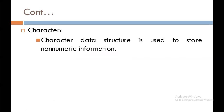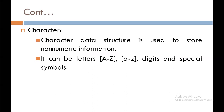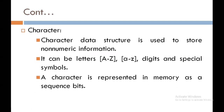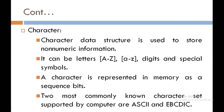The next data structure is character. It is used to store non-numeric information. It can be letters — capital A to capital Z, small a to small z — digits, and special symbols. A character is represented in memory as a sequence of bits, and a sequence of characters is called a string. The two most commonly known character sets supported by computers are ASCII and EBCDIC.